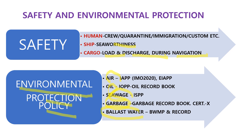What is Environmental Protection Policy? Environmental protection covers air, oil, sewage, garbage, and ballast water. Air is covered by IAPP, oil by IOPP, sewage by ISPP, garbage by the garbage record book — but garbage does not have an issuing certificate. Ballast water has a ballast water management plan, procedure, and record.